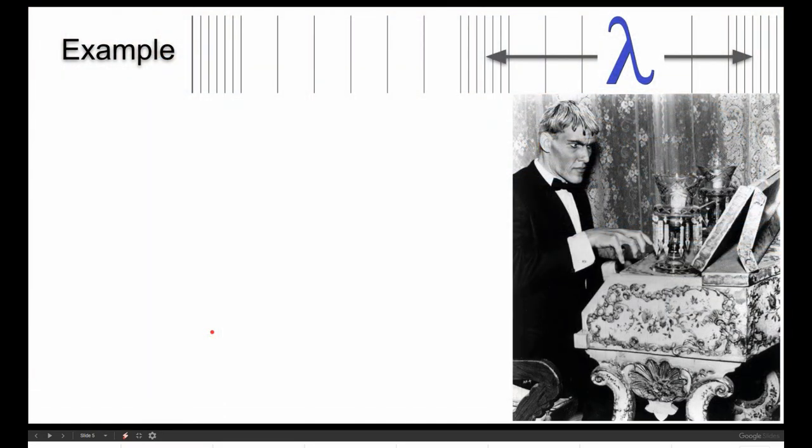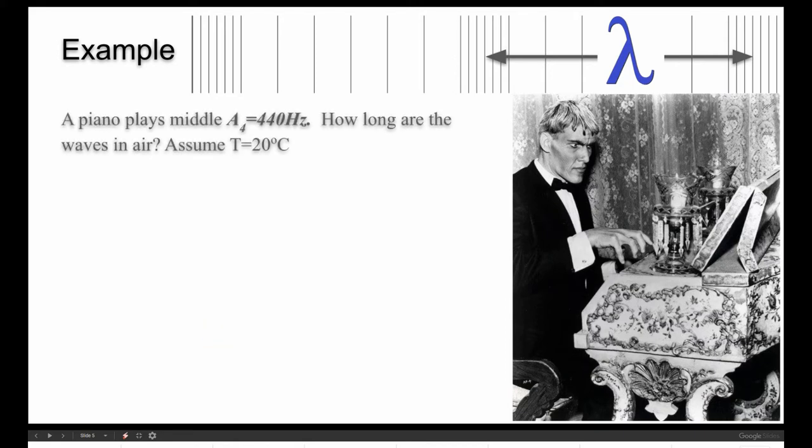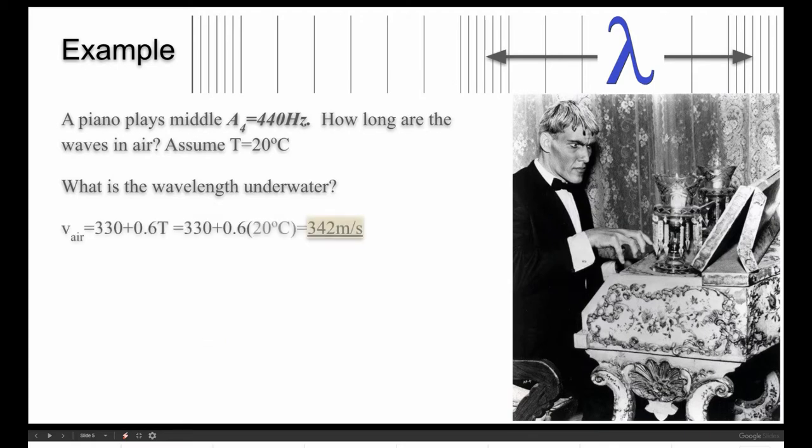So let's take an example. We'll get Lurch here playing the harpsichord from a long, long time ago, and we're going to work out the wavelength of his harpsichord. So he's playing A4, 440 hertz. How long are the waves in air? We assume the temperature is 20 degrees. What is the wavelength underwater? Let's carry out the two calculations. Step one, we compute the speed in air using that empirical formula, meaning the guy just modeled it so you could avoid the university level math. And we get 342 meters per second.